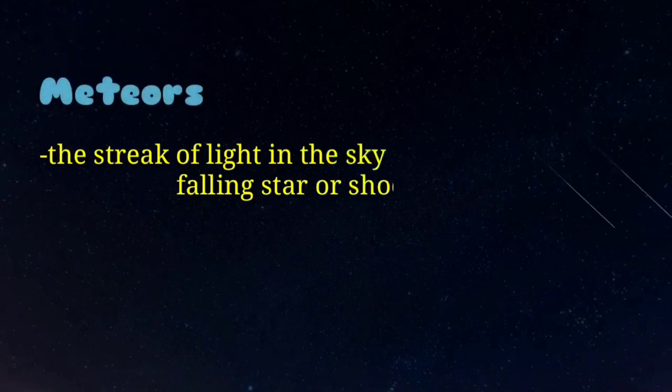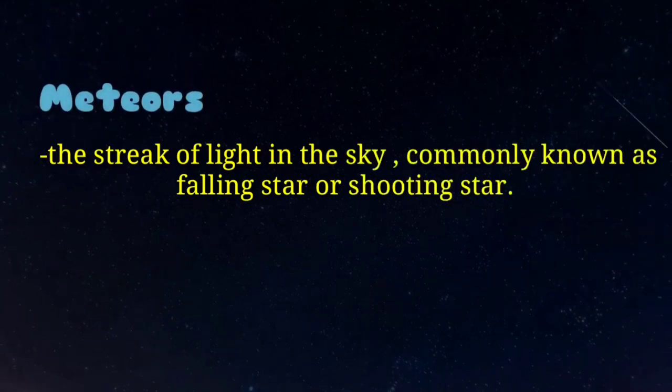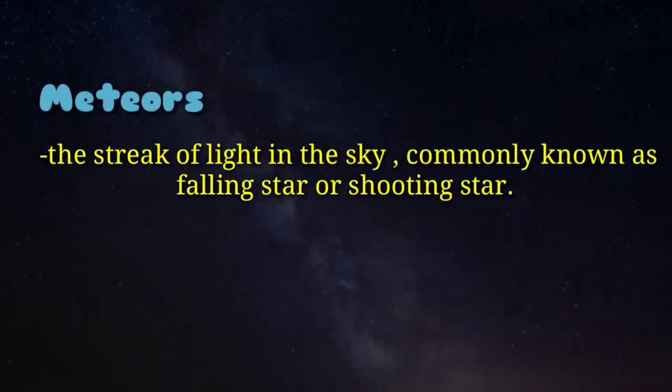Have you ever seen a shooting star in the night sky? It appears as an object with a tail, just like a cone. It travels quickly and appears to fall to the ground. A shooting star is another name for a meteor, but the truth is a meteor is not a star at all. Meteors are streaks of light in the sky, commonly known as falling stars or shooting stars.